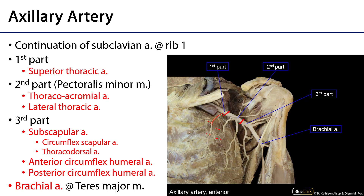The second part of the axillary artery has two major branches. The first is the thoracoacromial artery, which supplies pectoralis major and minor with blood, as well as branches to the deltoid muscle and the shoulder. The name refers to the thorax and the acromion process. The other branch is the lateral thoracic artery, which is the dominant blood supply to serratus anterior. Serratus anterior also received a little help from the superior thoracic artery.